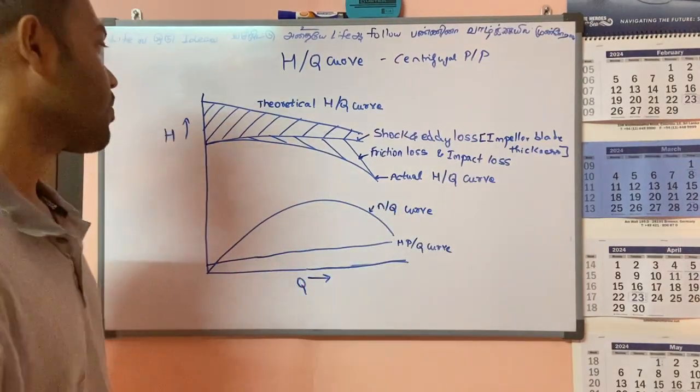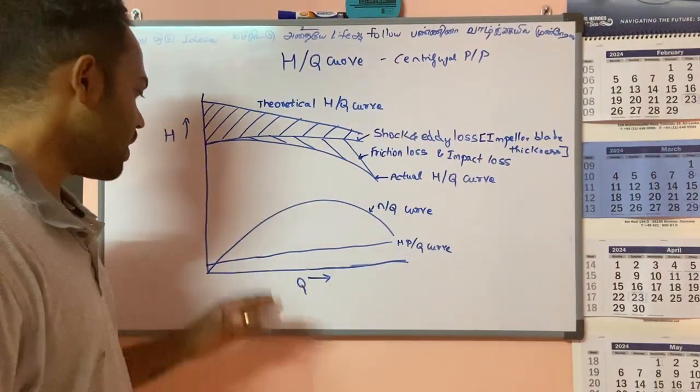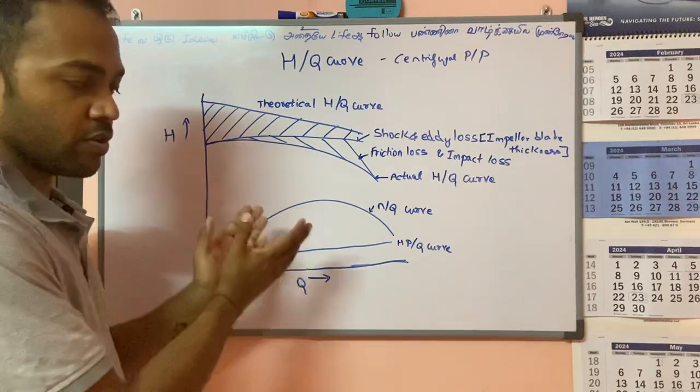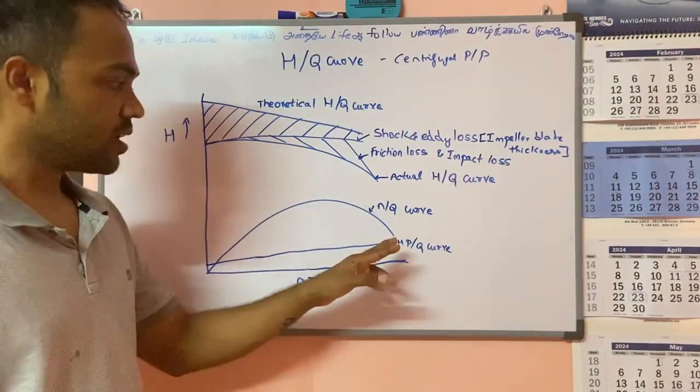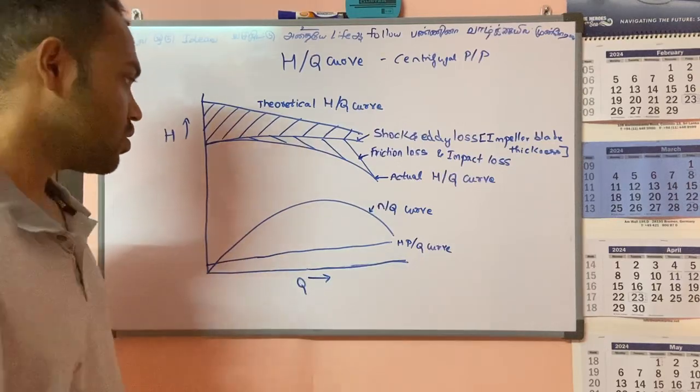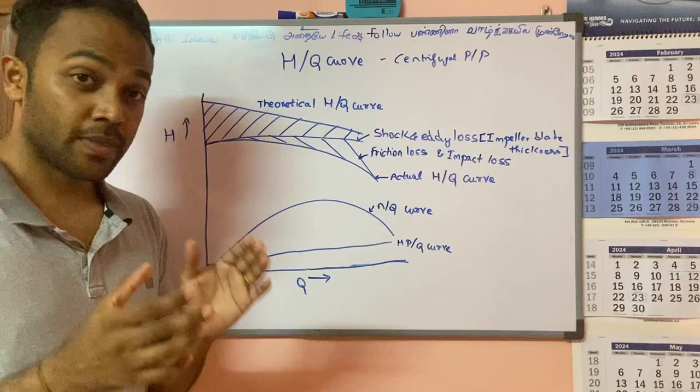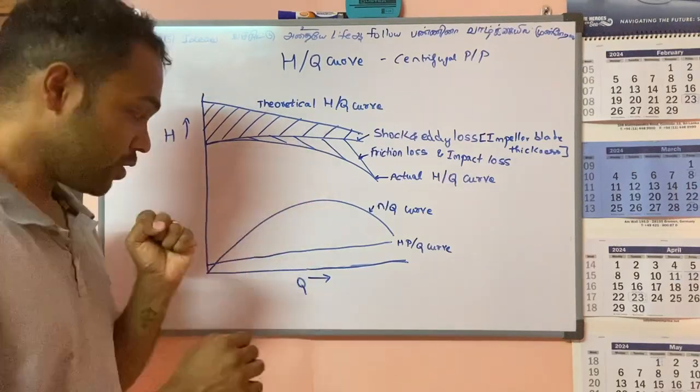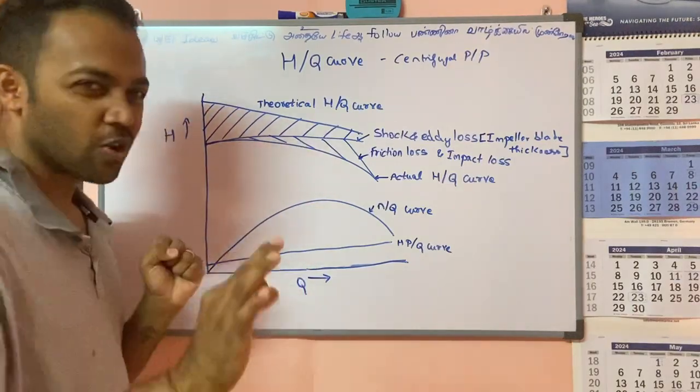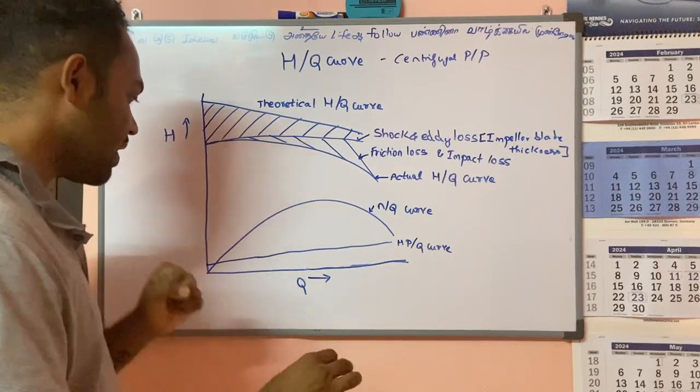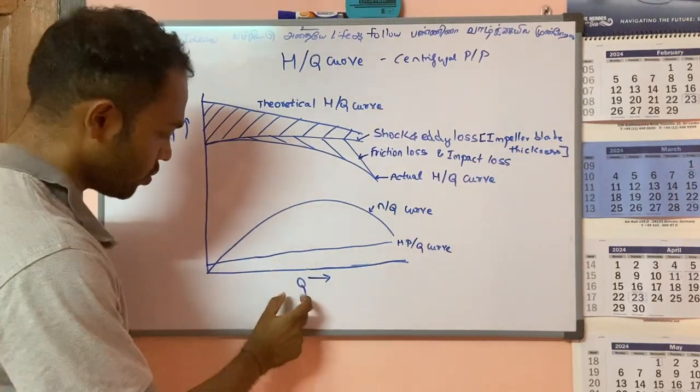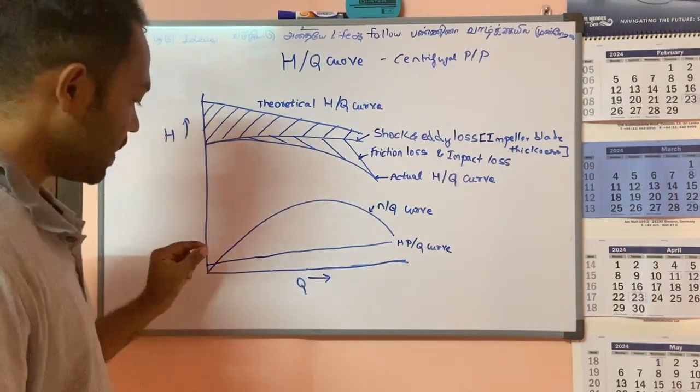Next is the power curve, also called the HP/Q curve. This power curve means that minimum power is consumed when the flow is zero, that is when the discharge valve is closed. When the throughput is zero, the power consumption is also minimum. This is the HP/Q curve.